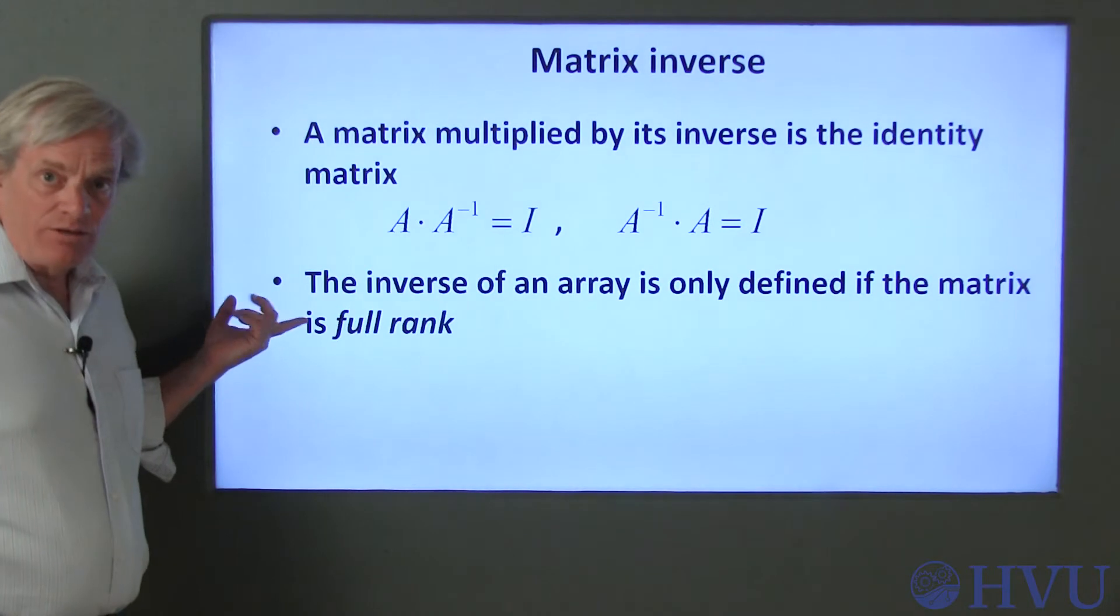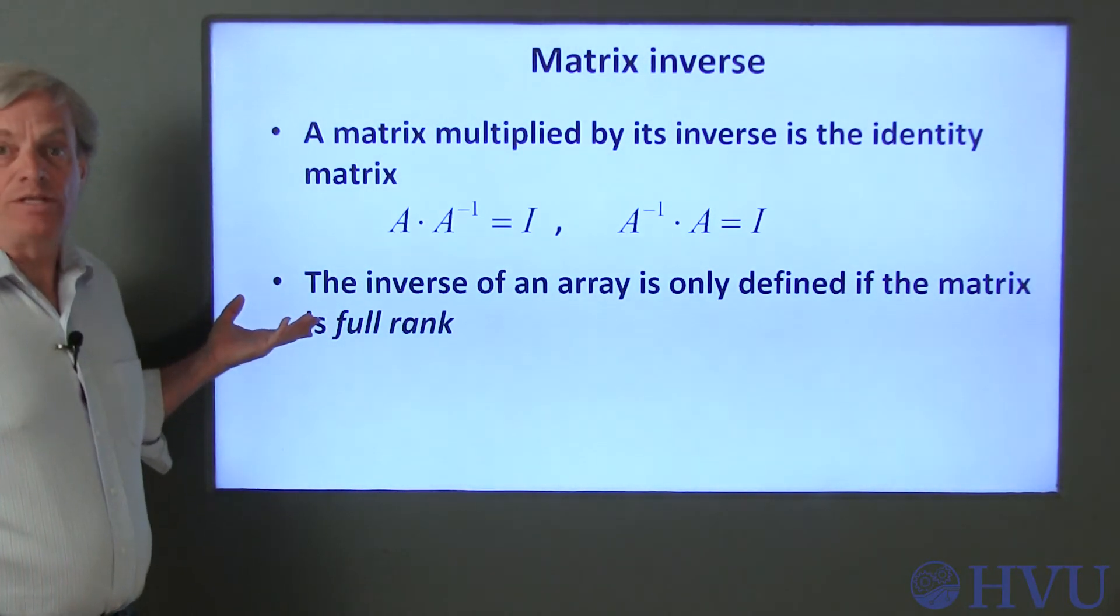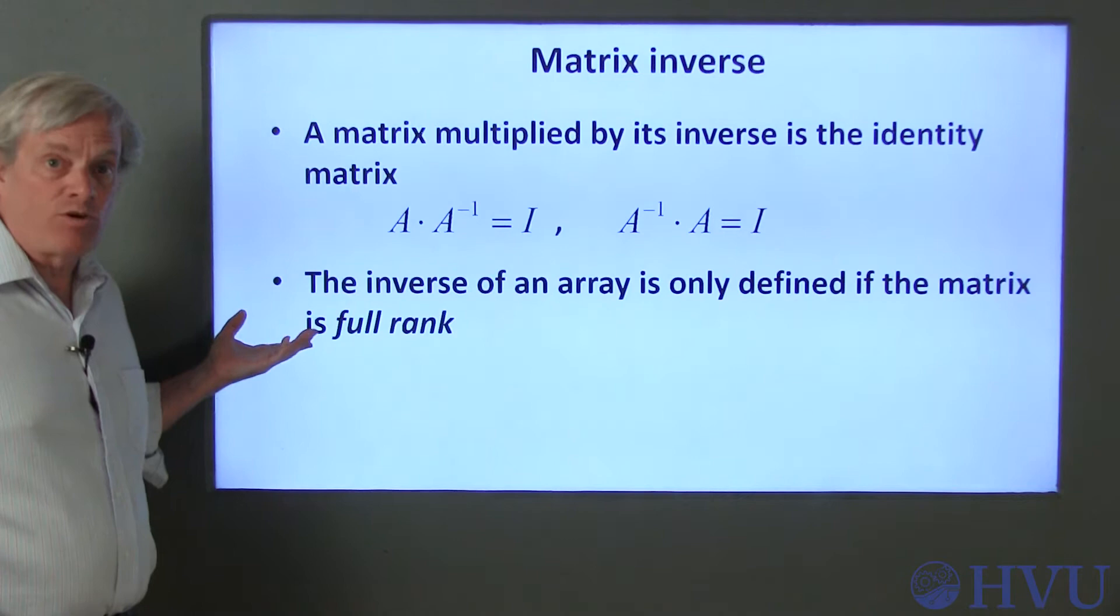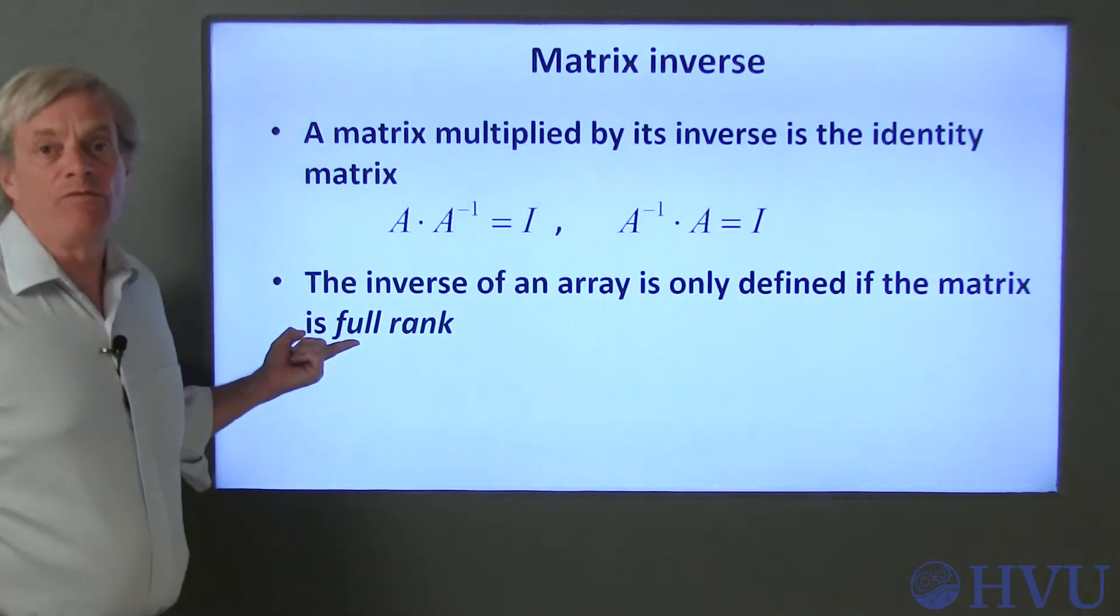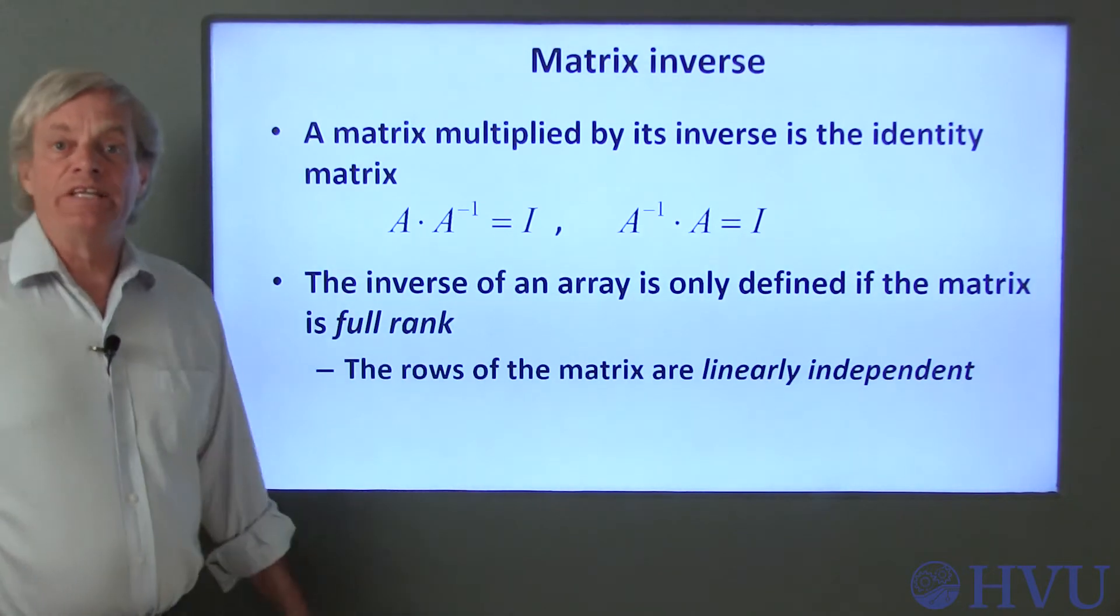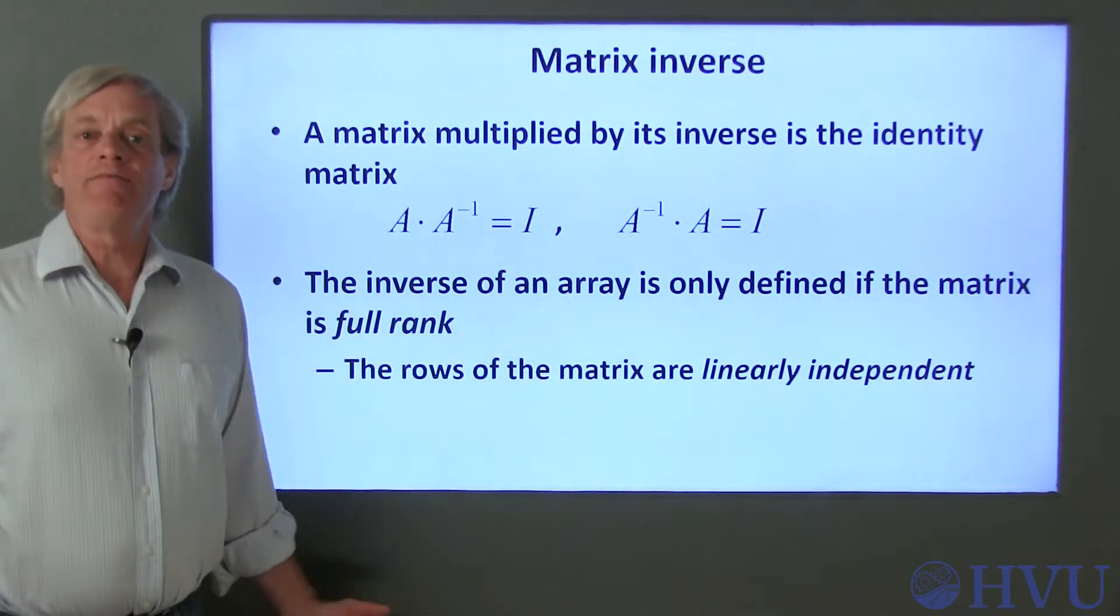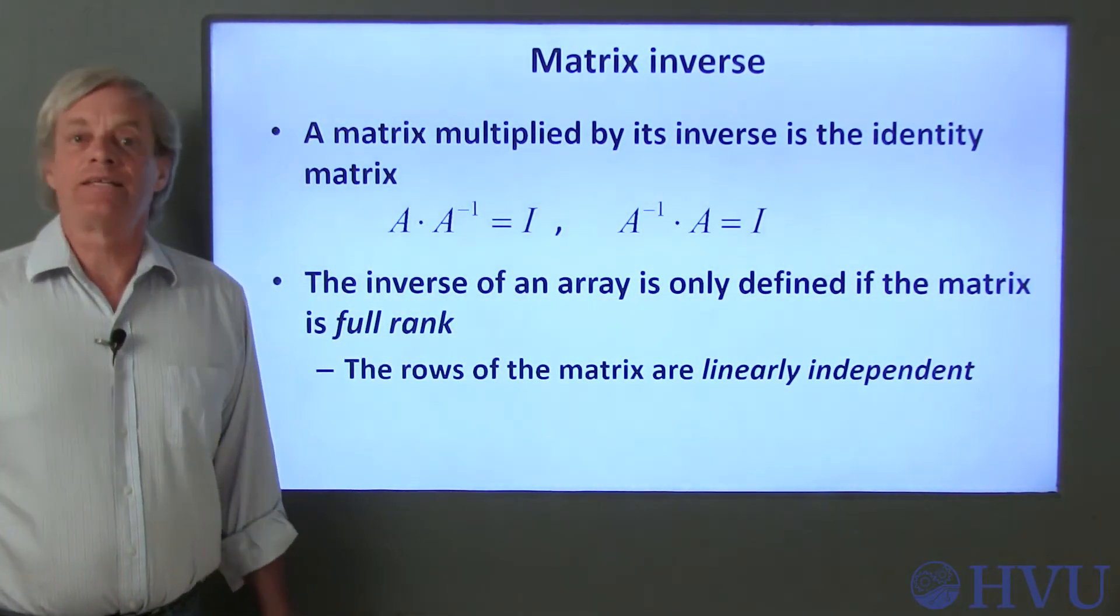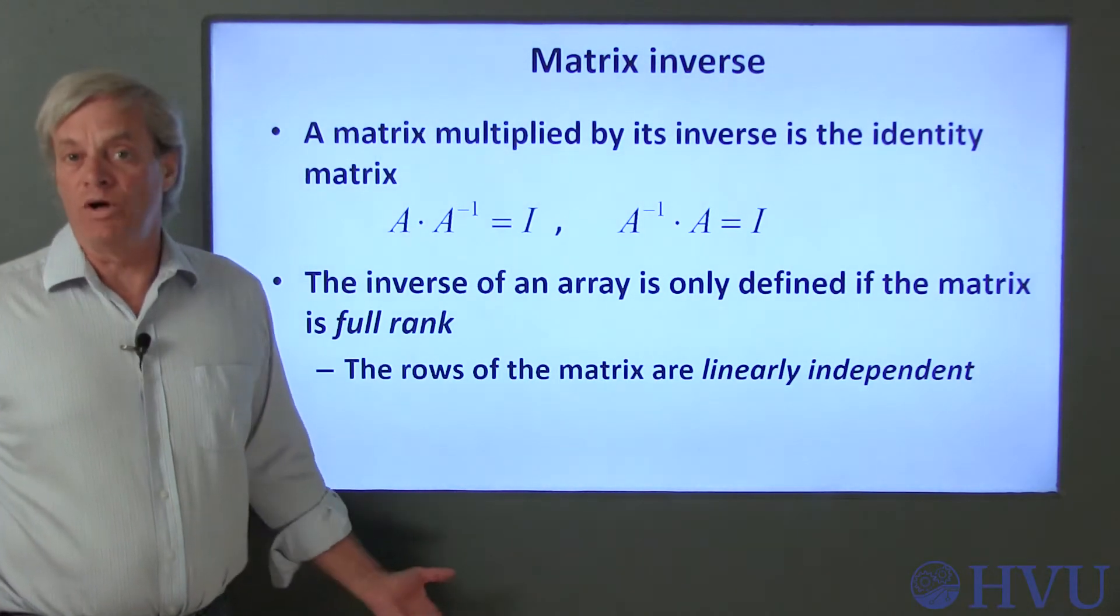As with scalars, the inverse isn't defined for all matrices. The condition for a matrix to be invertible is that the matrix has to be full rank. This means that the rows of the matrix are linearly independent, which is a way of saying that every row of the matrix has to contain separate information from all the other rows.